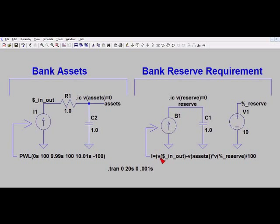Now notice that the current is equal to the voltage at this dollar_in_out node, that's this particular voltage here, minus the voltage at the assets node, which is this particular voltage here. So if current is flowing towards the right through R1, the voltage here will always be greater than the voltage at the assets, and this will be a positive term in this current equation.